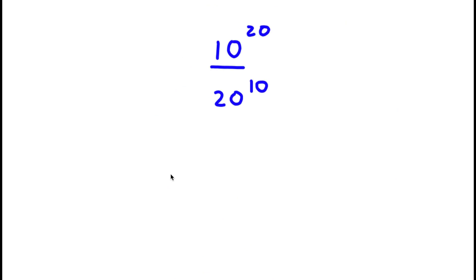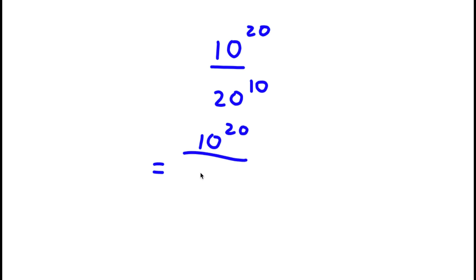Welcome back to TechLink Academics. In today's video I'm going to be teaching you how to solve this exponential problem. I have 10 to the power of 20 over 20 to the power of 10. Here 20 can be written as 10 times 2, so now I have 10 to the power of 20 over 10 times 2 to the power of 10.